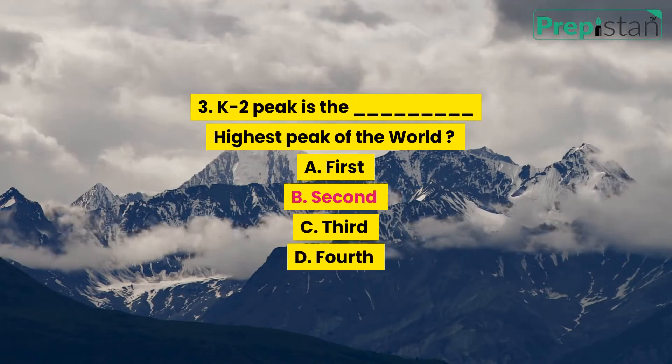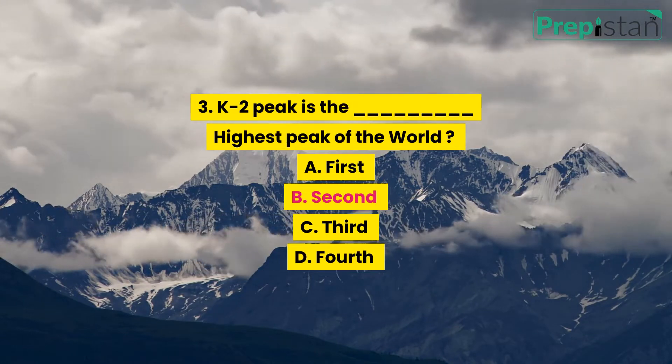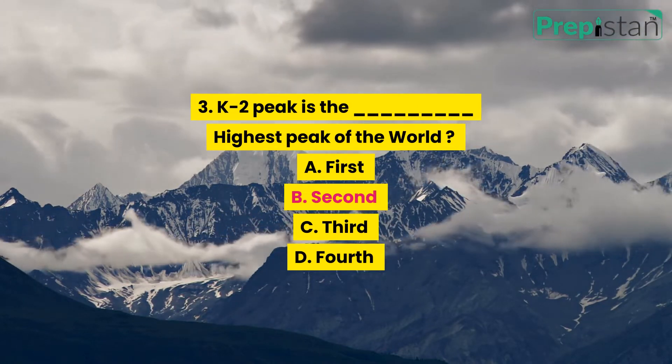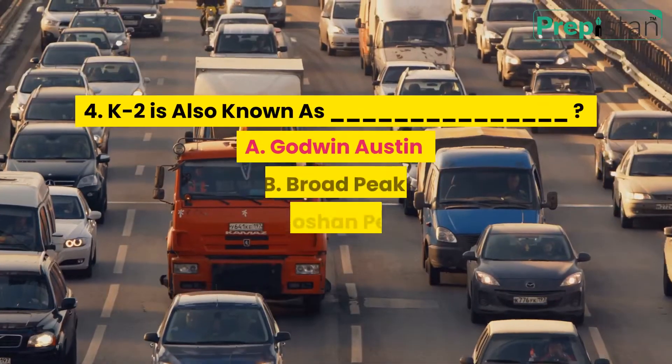Question 3: K2 peak is the blank highest peak of the world. A. First, B. Second, C. Third, D. Fourth.